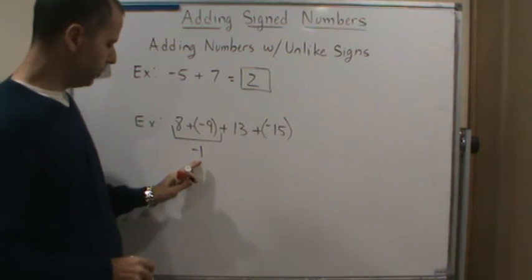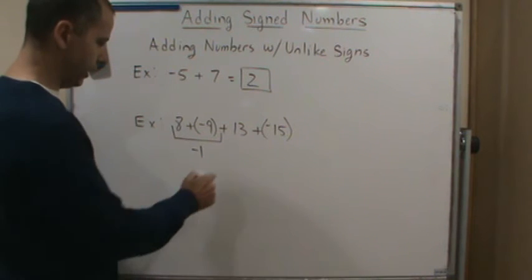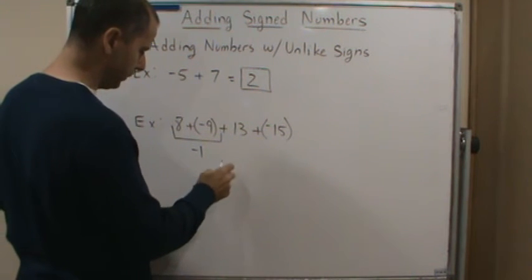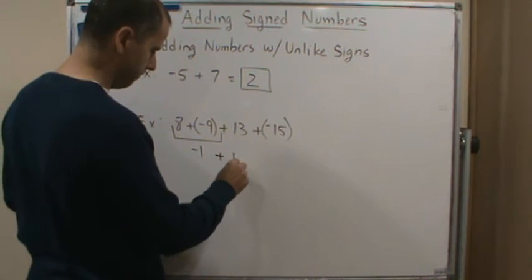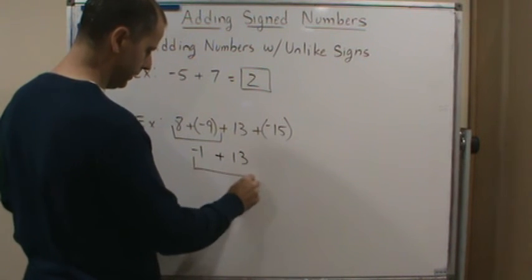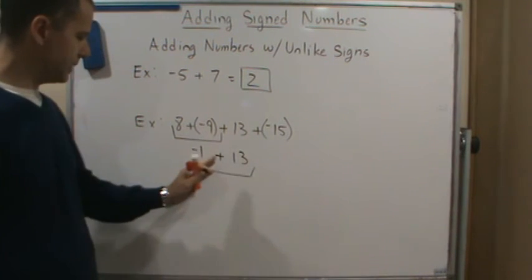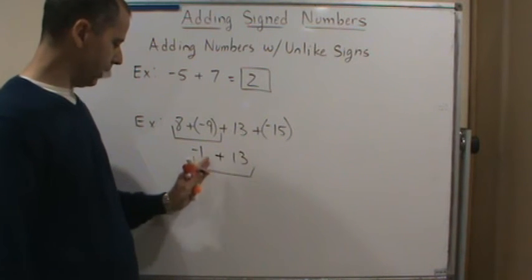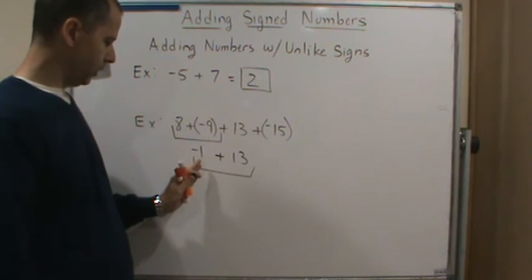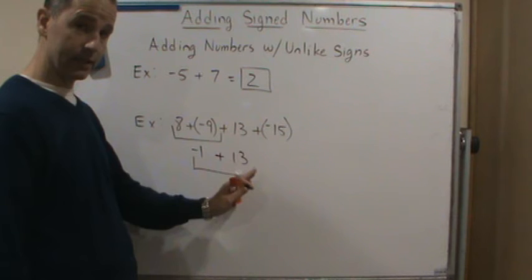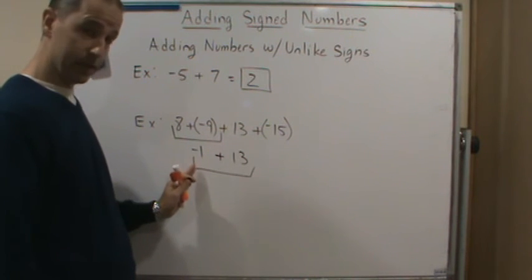Now what I'm going to do is I'm going to pair up the negative 1 with the 13. So now what I'm going to do is I'm going to do these two. Now since they have opposite signs, now what I'm going to do is I'm going to take the absolute value of both, which gives me 1 and 13. I'm going to subtract them. 13 minus 1.